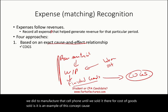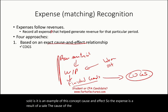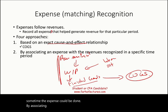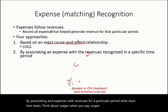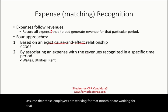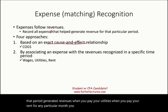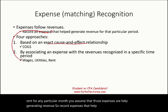The second approach is associating an expense with revenues for a particular period. Think about wages — you assume employees are working that month and generating revenues. When you pay utilities or rent for a particular month, you assume those expenses help generate revenue. So record expenses that help generate revenue — that's the association approach.